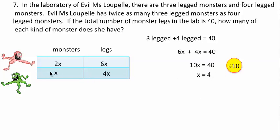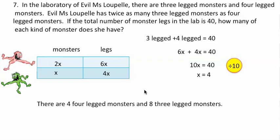That means we have four of these four-legged monsters, which is awkward to say. And that means that we have two times four, eight three-legged monsters. All right.